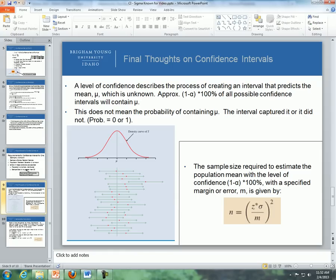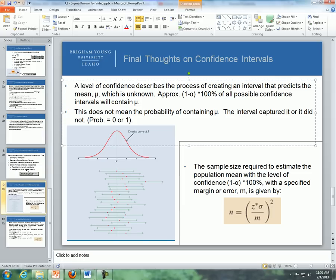So we could do 1,000 confidence intervals or so, and approximately 95% of all those confidence intervals would contain the true mean. This does not mean the probability of containing mu. The interval either captured it or did not. So it's either 0 or 1. We either got it or we didn't.